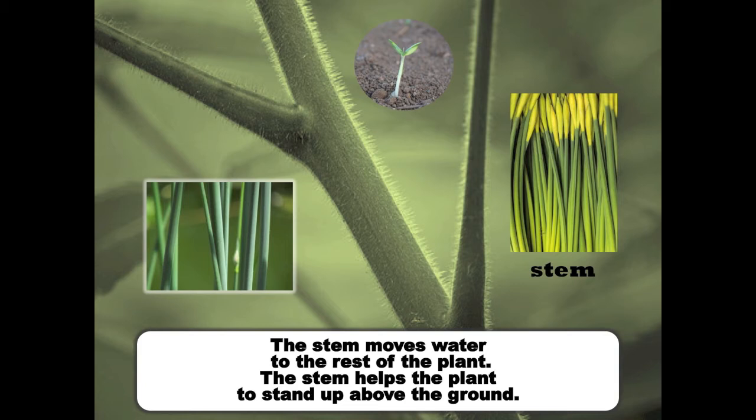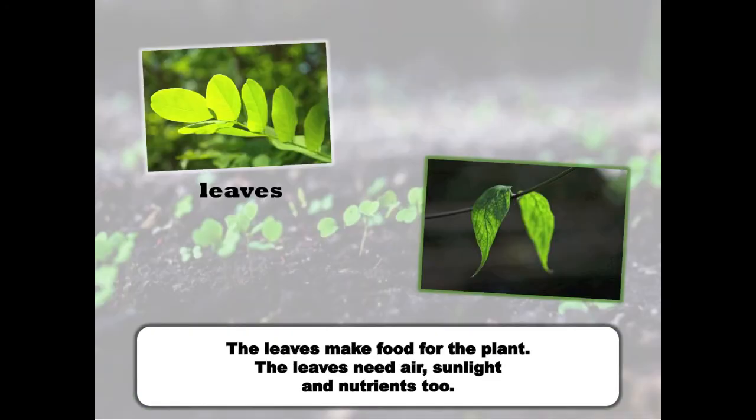The stem helps the plant to stand up above the ground. The leaves make food for the plant. The leaves need air, sunlight, and nutrients too.